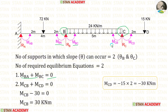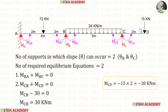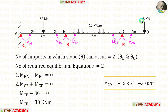At joint C, there are 2 moments: MCB and MCD. When we add these two moments, it equals zero. We can easily calculate MCD because after point C there is an overhang. To find MCD, we calculate the moment at point C from point D: there is a point load of 15 kN over a distance of 2 meters, so MCD equals 15 multiplied by 2.